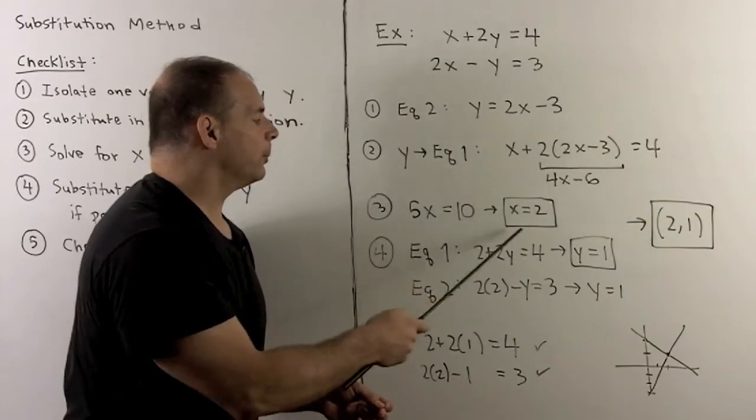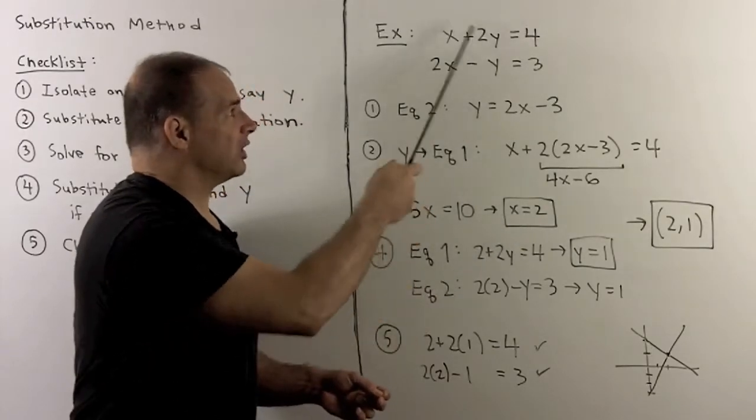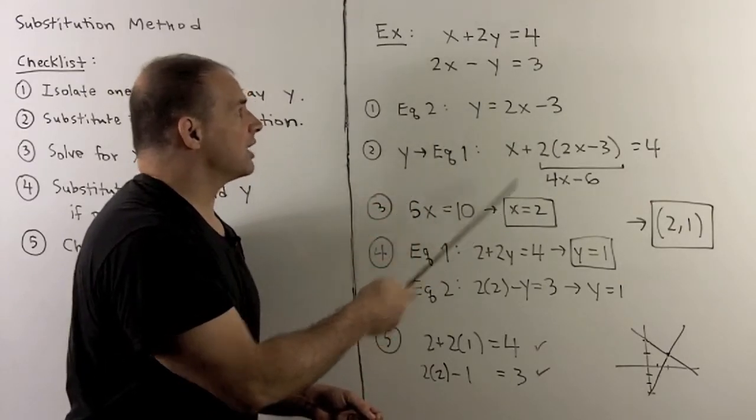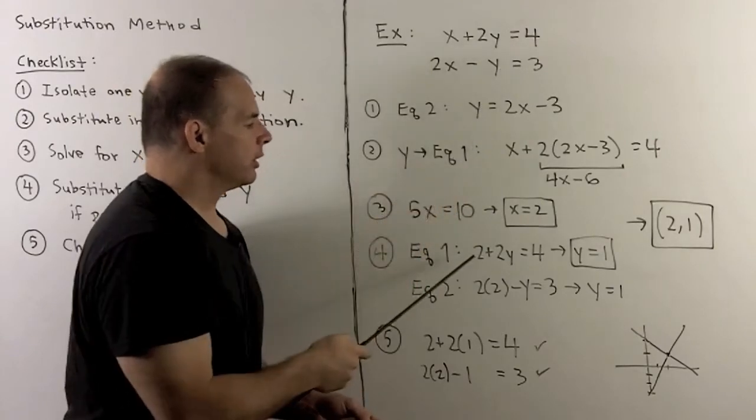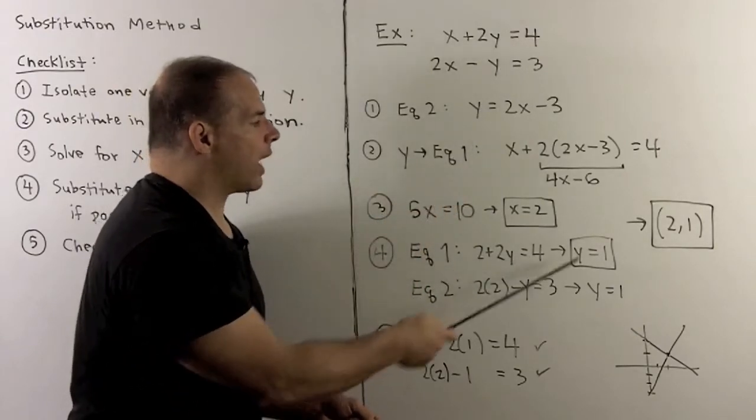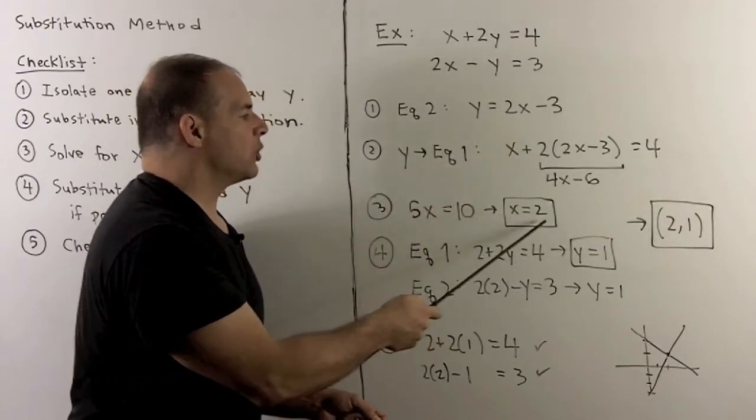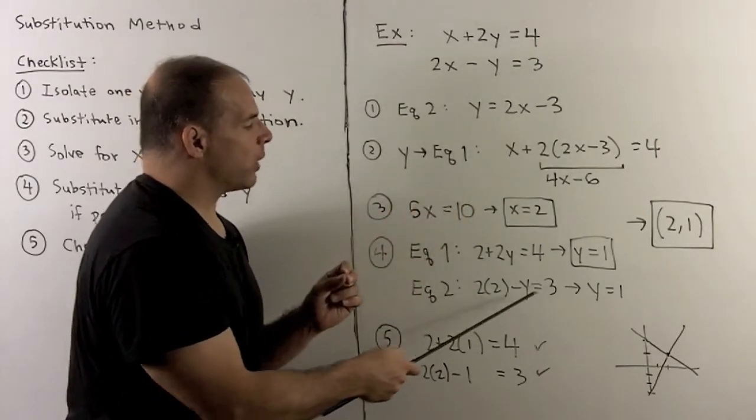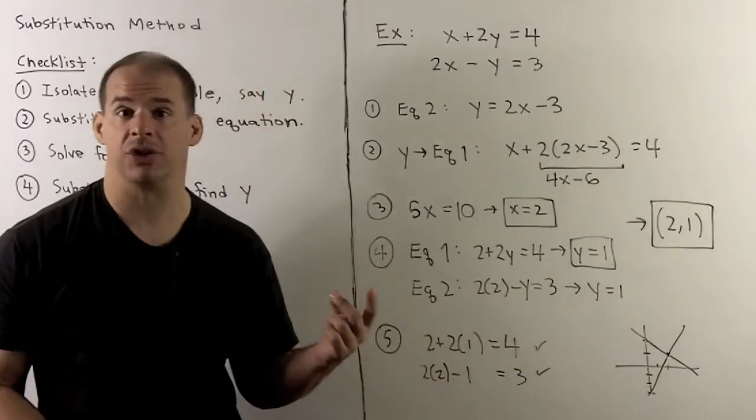Now, we're going to take this 2. I can go back to either equation in the beginning. I can even use this equation if I want. If I put it back into the first equation, we have 2 + 2y = 4, so y = 1. If I've chosen to put it into equation two, we would have 2(2) - y = 3, y = 1, giving the same answer.